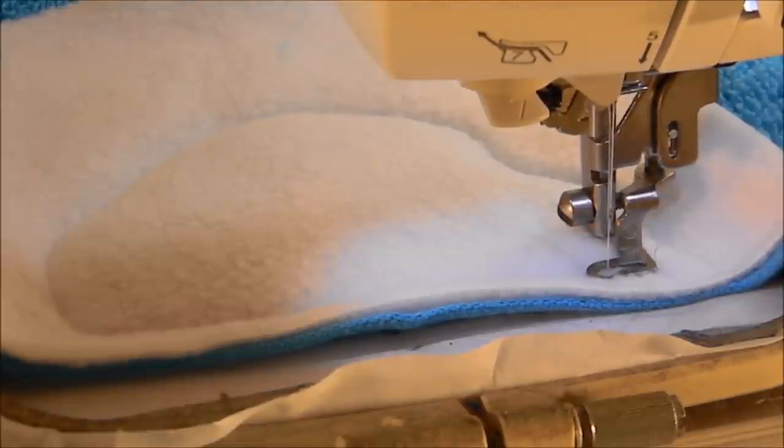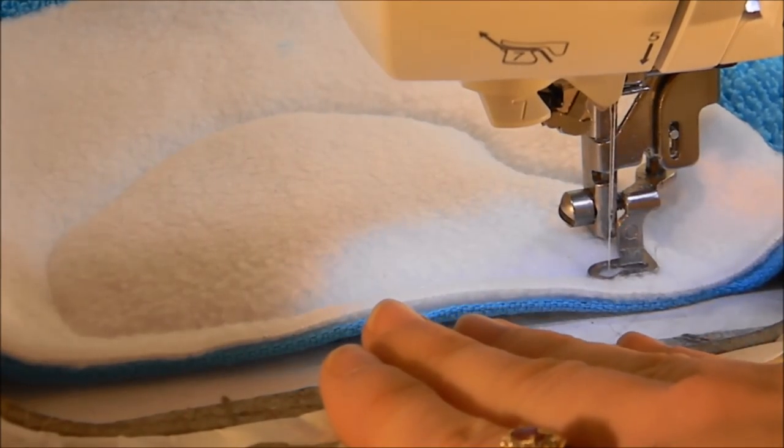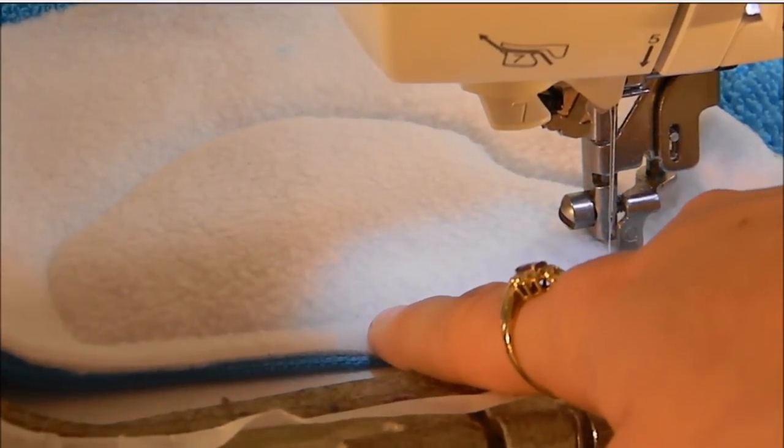So now I'm going to do the tack down stitch. It will go ahead and it will stitch out twice around the outline of his face. And when it's done, I will pull it off the machine. Leaving it inside the hoop, I will cut out around the edge of the stitching.